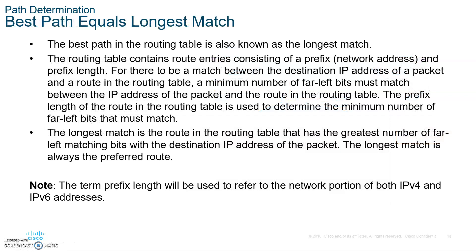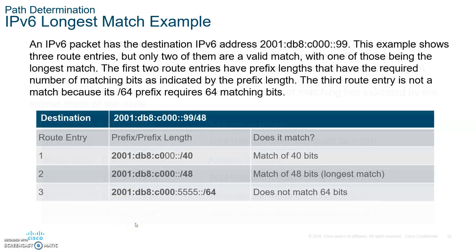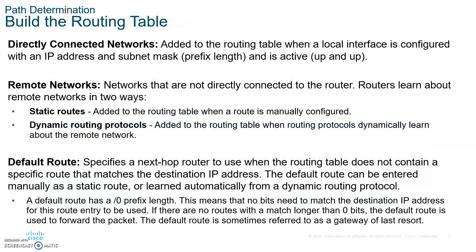That's the prefix match concept. For example, given /12, /18, and /26, the /26 would be the longest match even if the first 16 bits are the same. The same principle applies to IPv6 addresses.